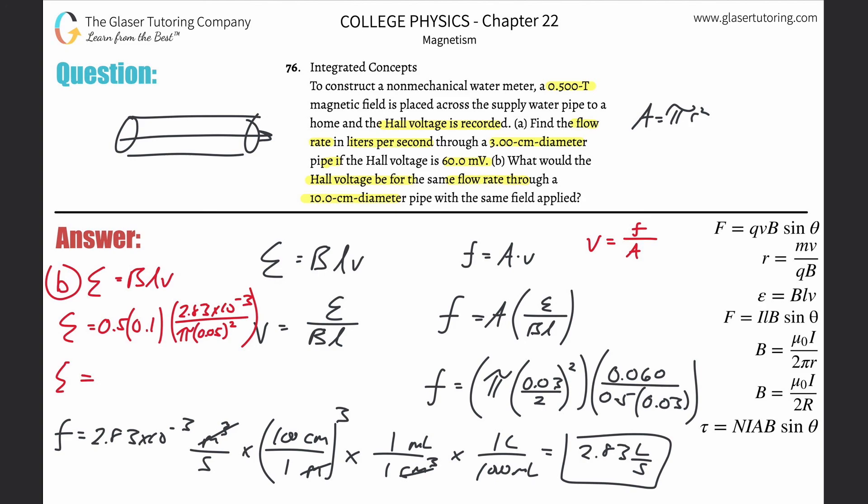Good. And then divide it now by parenthesis pi times 0.05 squared, close those parentheses. And here we get a value of about 1.80 times 10 to the minus 2 volts, and that's the Hall voltage.